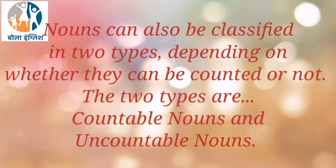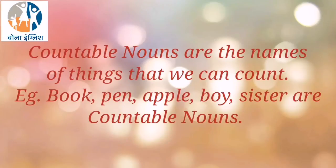Nouns can also be classified in two types depending on whether they can be counted or not. The two types are countable nouns and uncountable nouns. Countable nouns are the names of things that we can count. For example, book, pen, apple, boy, sister are countable nouns.